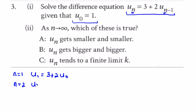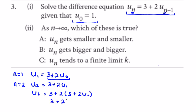When n is equal to 2, u₂ becomes 3 plus twice u₁. We have u₁ from above, so substituting in we get u₂ is equal to 3 plus twice (3 plus 2u₀). Multiplying this out: 3 plus twice 3 plus 4 times u₀.